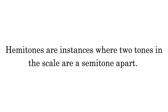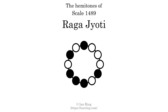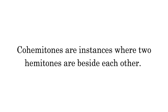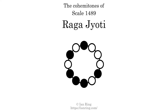Hemitones are instances where two tones in the scale are a semitone apart. This scale has two hemitones. They are at positions here and here. Co-hemitones are instances where two hemitones are beside each other. This scale has one co-hemitone, here.